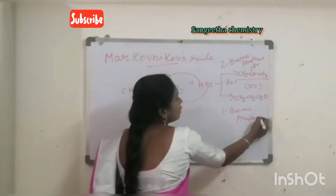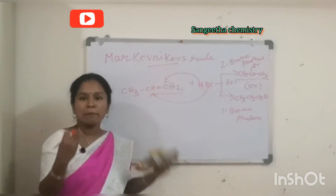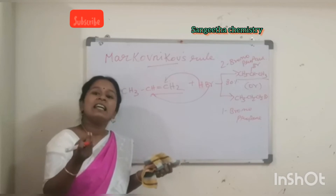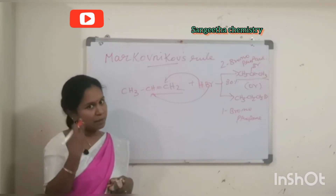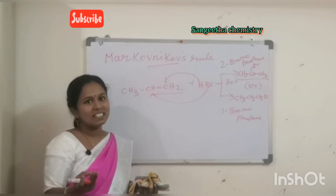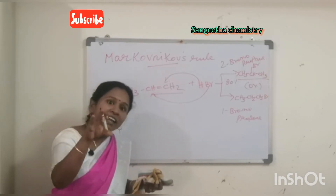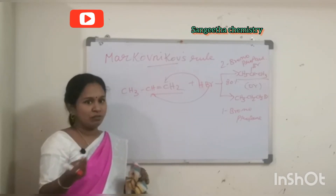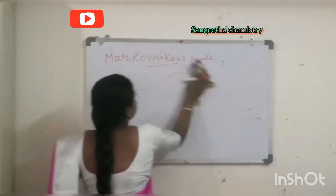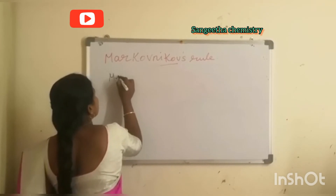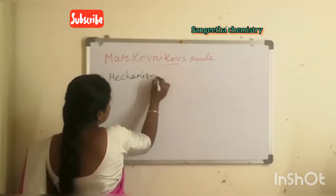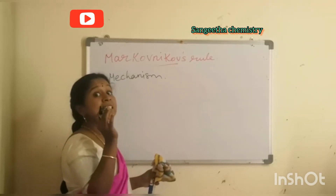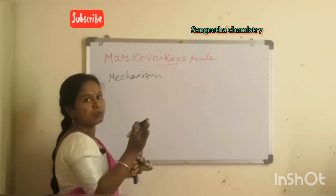Now we are going to look at its mechanism — the electrophilic addition reaction. In this video, I have explained the mechanism. The first step is ionization, the second step is attack of the electrophile to the double-bond-containing carbon, and the third step is addition of the nucleophile. Markovnikov's Rule applies specifically to unsymmetrical alkenes.